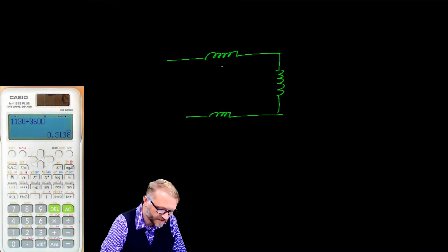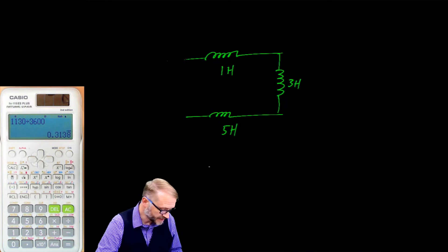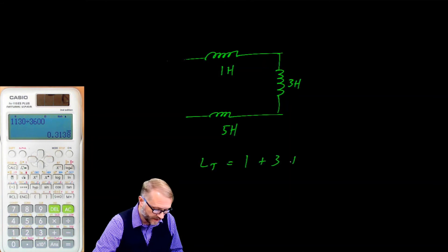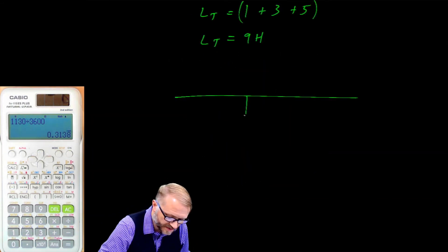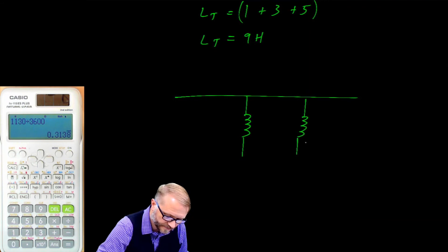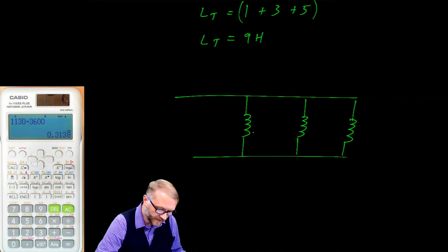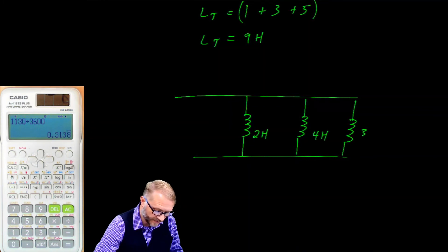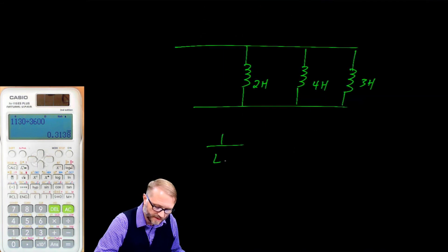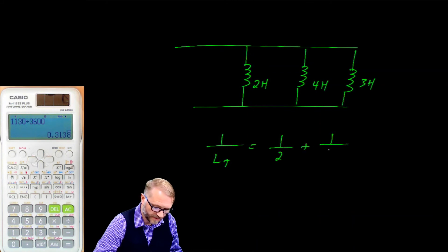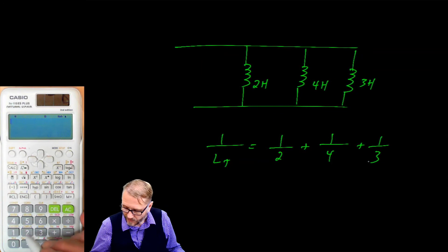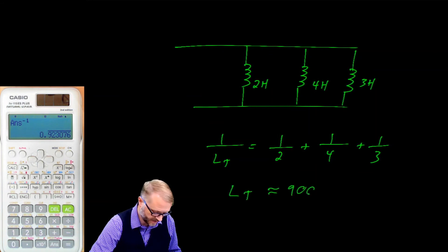For inductors in series — say 1 H, 3 H, and 5 H — the rule is the same as for resistors: total inductance = 1 + 3 + 5 = 9 H. For inductors in parallel — say 2 H, 4 H, and 3 H — total inductance is 1/(1/2 + 1/4 + 1/3), which gives approximately 900 millihenries.